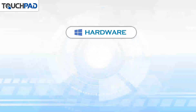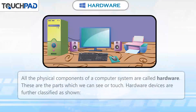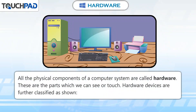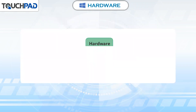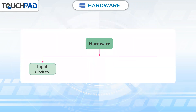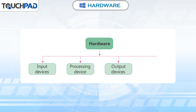Hardware. All the physical components of a computer system are called hardware. These are the parts which we can see or touch. Hardware devices are further classified as: input devices, processing device, output devices, and storage devices.